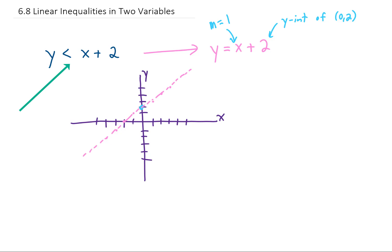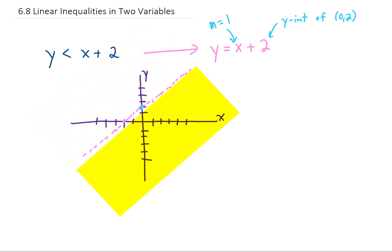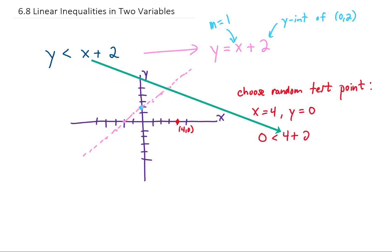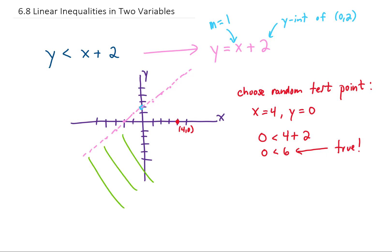All of the solutions to this inequality are going to be represented by all of the points above this line or all of the points below this line. We're going to choose a test point either above or below this line. Let's choose the test point (4, 0) — x equals 4 and y equals 0. Plugging that into the original inequality, we get 0 is less than 4 plus 2, which gives us 0 is less than 6. Since this is a true statement, this test point is in our solution set, and since it was below the line, the entire region below the line is the solution set.